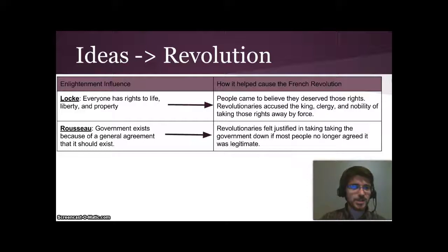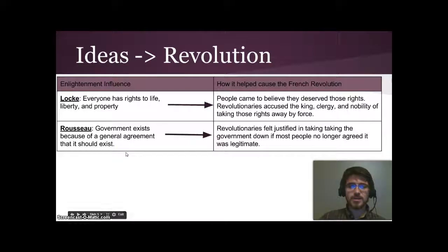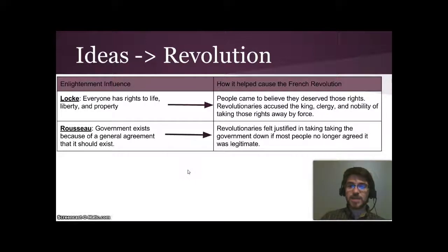Natural rights are being taken away. Rousseau had this idea that government exists because of a general agreement that it should exist — the social contract. And the revolutionaries felt justified in taking the government down if most people no longer agreed it was legitimate.